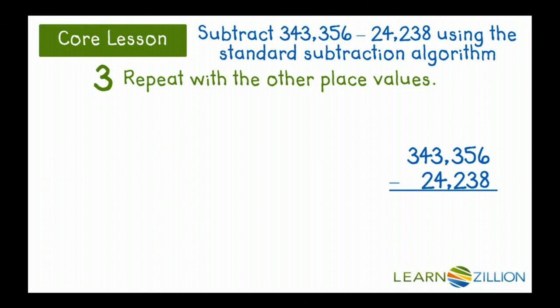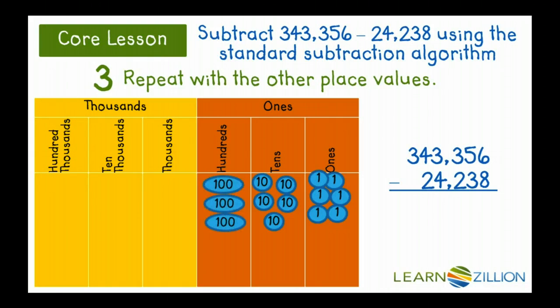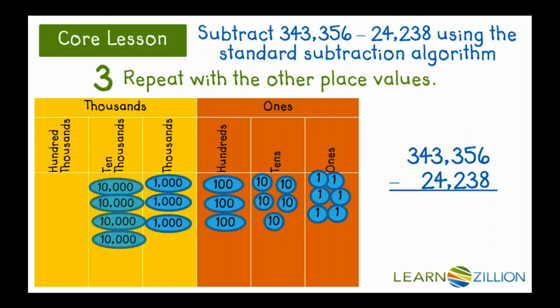343,356 minus 24,238. I'm going to use my place value chart to help us just so we have a visual. So let's put our top number into the place value chart. Six ones, five groups of ten, three groups of a hundred, three groups of a thousand, four groups of ten thousand, and three groups of a hundred thousand.